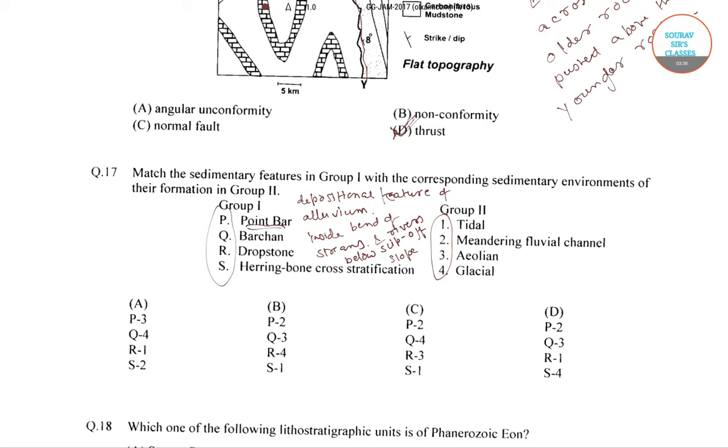Point bars are generally found in abundance in mature or meandering streams. So for P, the correct answer would be P-2.